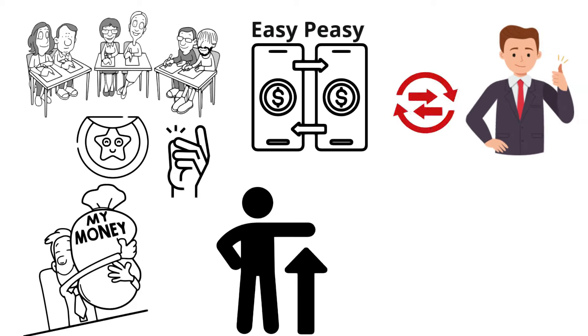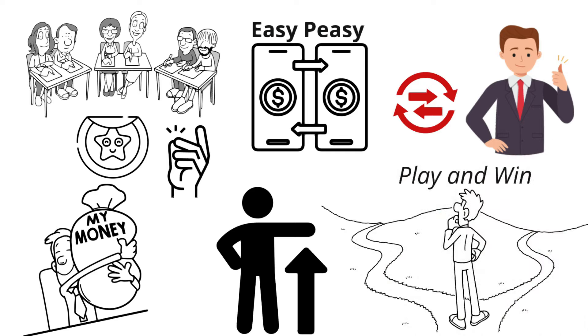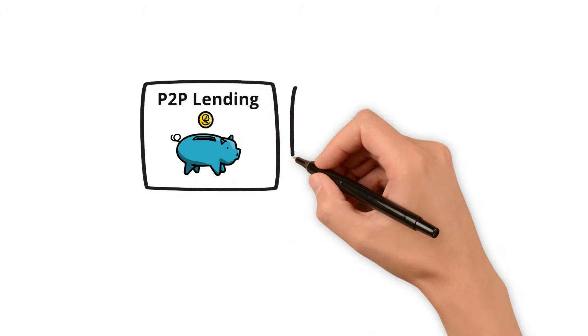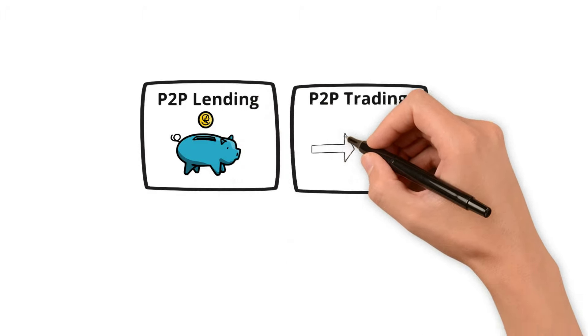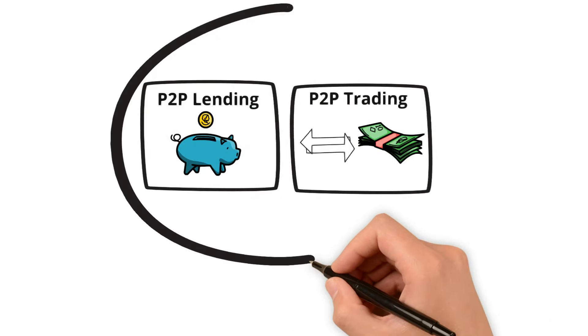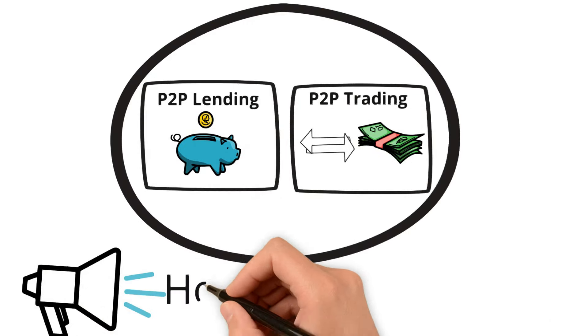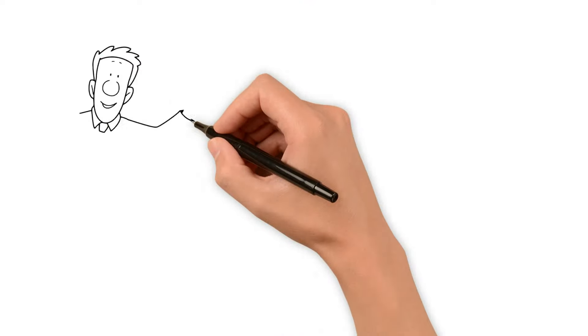In our P2P game today we're going to look at two special ways to play and win. One is called P2P lending where you can be like a mini bank, and the other is P2P trading where you swap things you have for money. Both ways are great for earning.